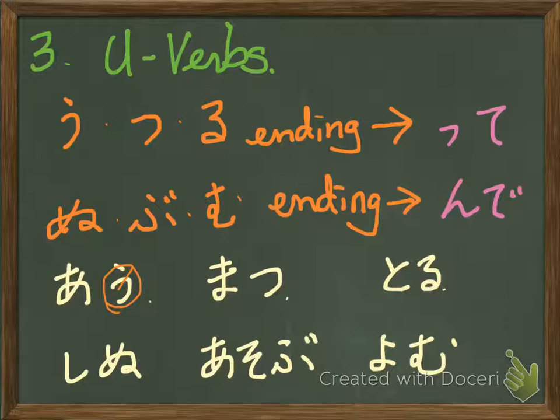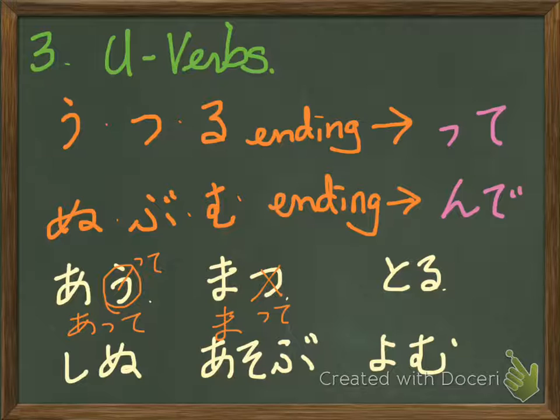So, au → atte. Atte is the te-form of au. Matsu — tsu ending — change tsu to tte, so matte. Matte is the te-form. Toru — same thing — becomes totte.